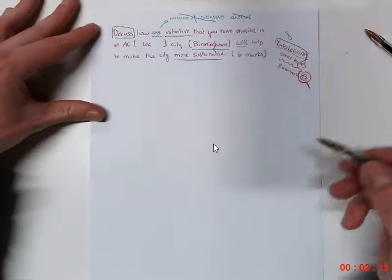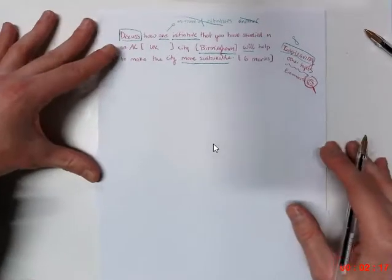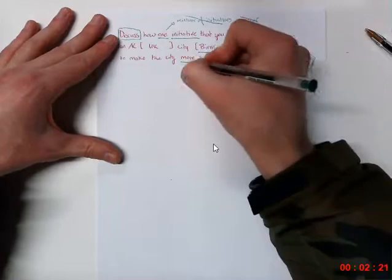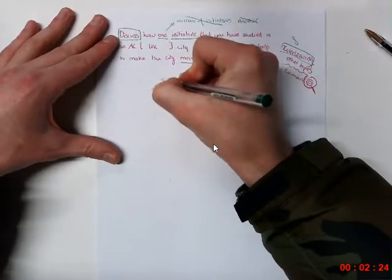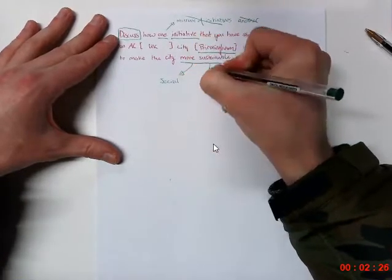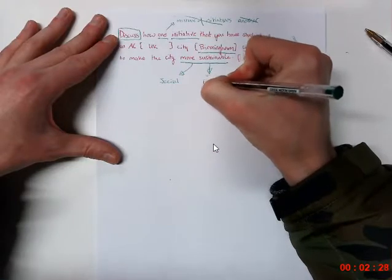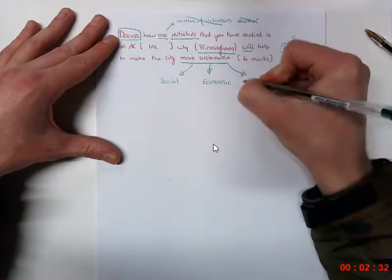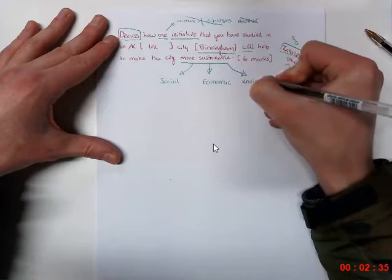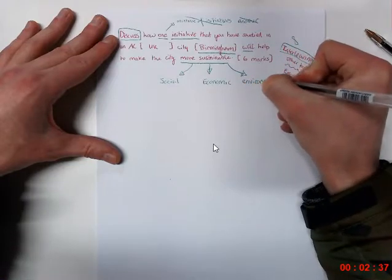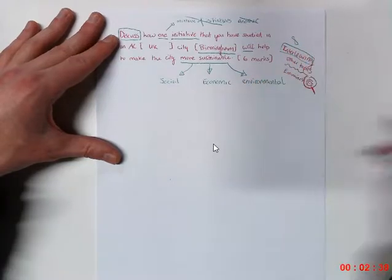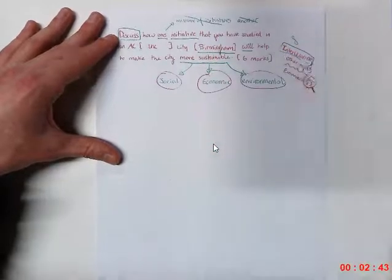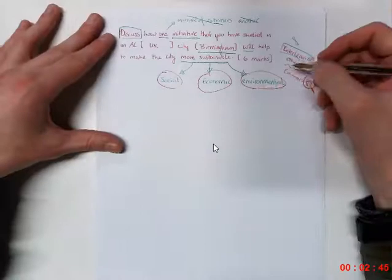So first of all, we need to have a focus on some of the things that we can talk about. And of course, we're looking at sustainability. So social, economic, and environmental sustainability will be really important in this answer. And we want to see a mixture of this discussed in the answer. One of the things that I've noticed with some of these answers in the past is that they tend to focus on environmental, because there's so much to talk about with the Library of Birmingham.